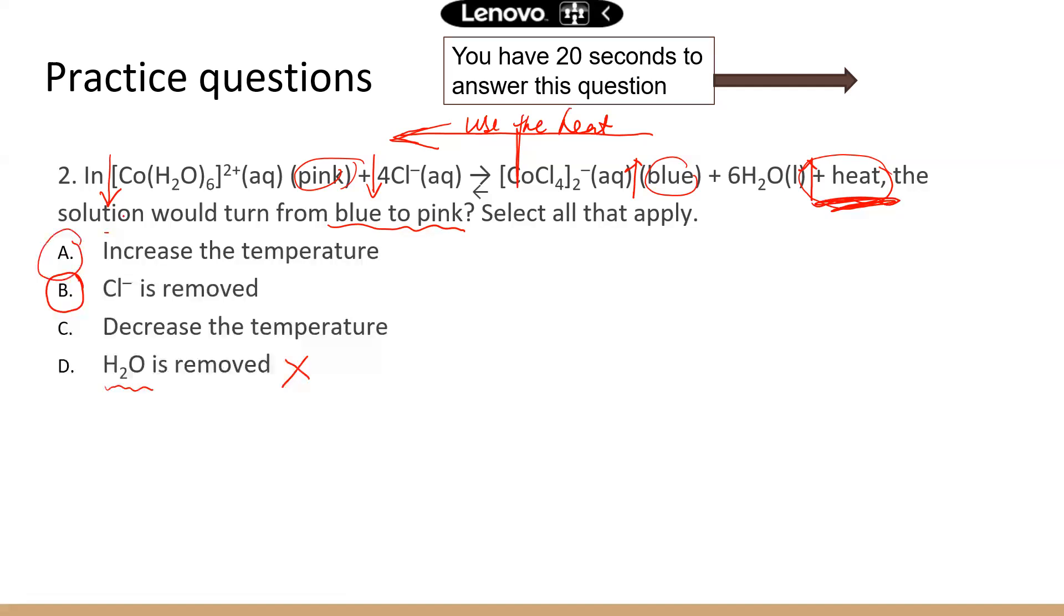So A is also correct. If you decrease the temperature, then the chemical reaction wants to make more heat to counteract that. C will make the chemical reaction shift to the right. So the correct answer is A and B.